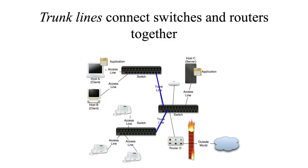We call them trunk lines because in the old days it was a group of cables that did phone calls — there might be a hundred different wires inside one of these trunk lines, and they were big and looked like an elephant's trunk. Trunk line. Nowadays, for a trunk line we're using an optical fiber, and it's even thinner than an unshielded twisted pair cable. So it hardly looks like a trunk, but we still call those a trunk line.